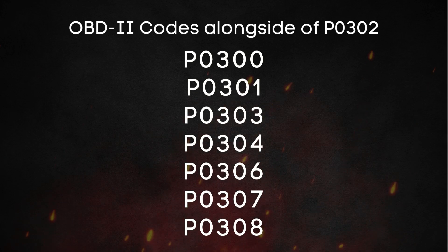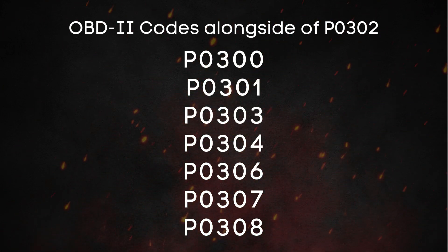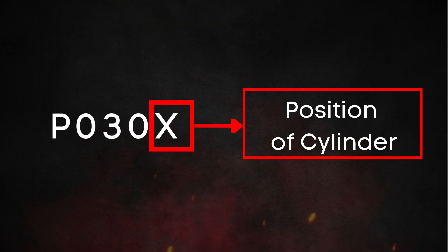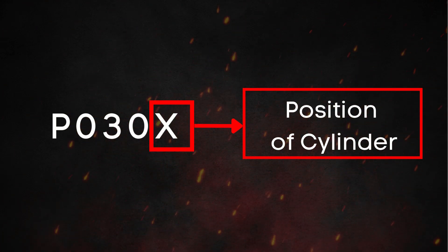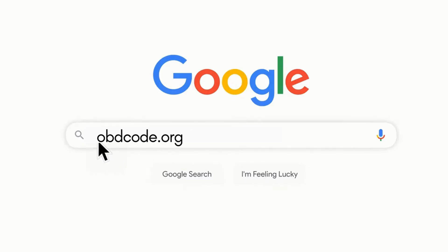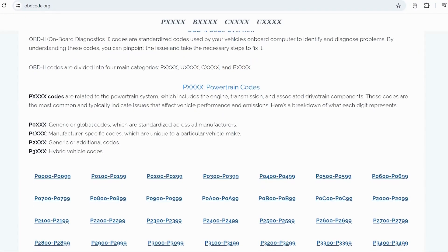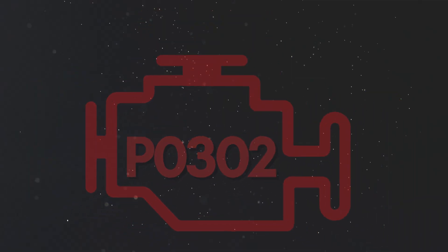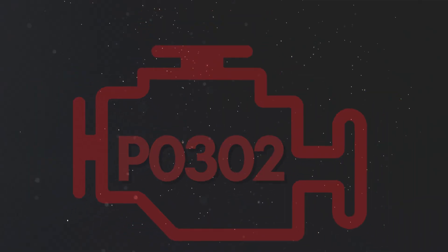You may also find other OBD-II codes like P0301 to P0308 alongside P0300. The last number in these accompanying codes refers to the affected cylinder. For a detailed explanation of what these codes mean, visit our website, obdcode.org.